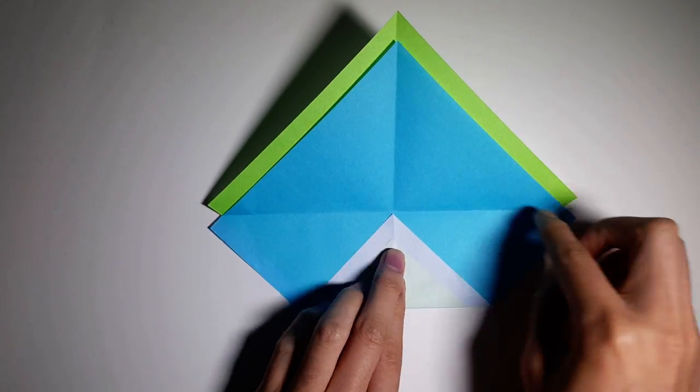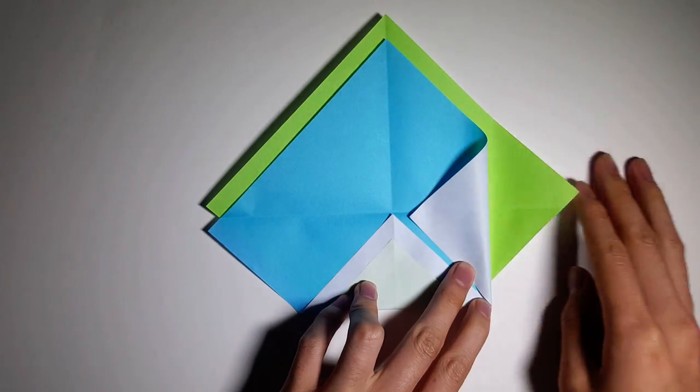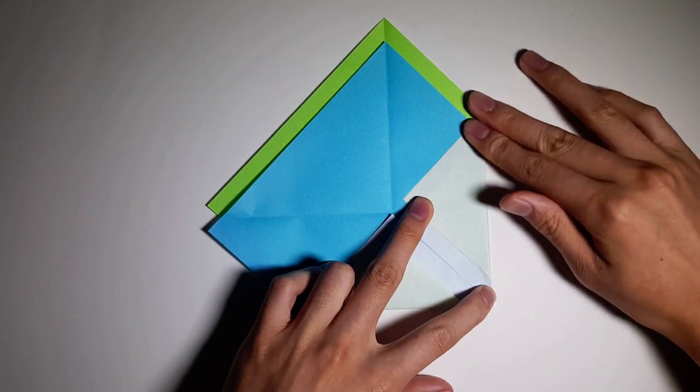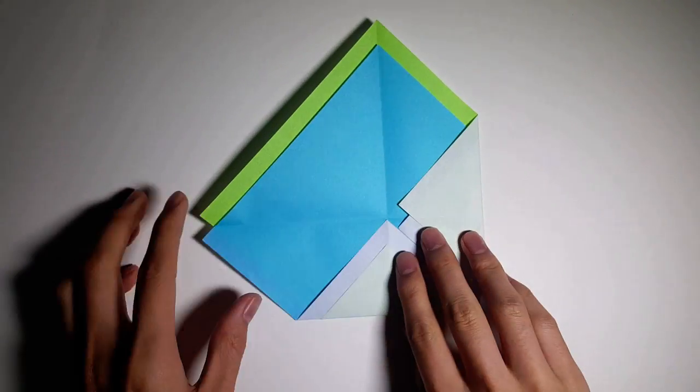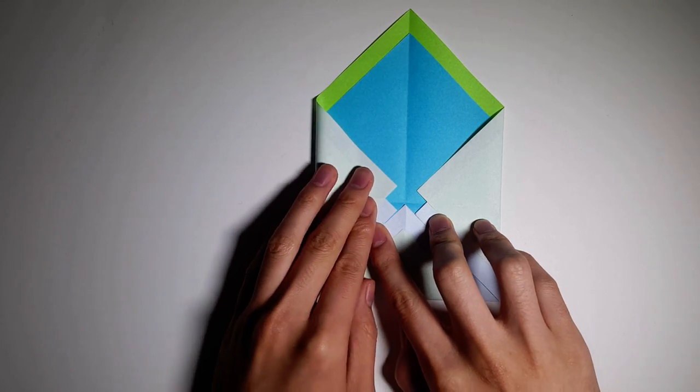And now we're gonna fold in the sides. So again, making sure that it doesn't overlap the other pieces of paper and that it just touches the side of it like this. So do the same for the left side or right side, whichever side you do first.